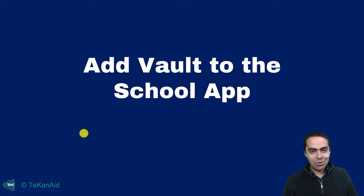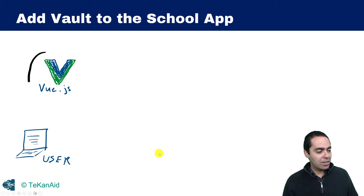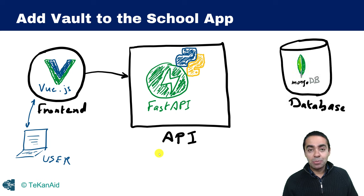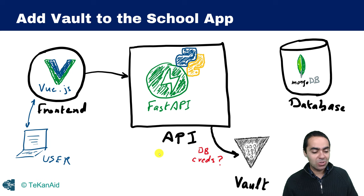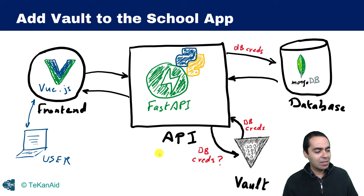Now let's add Vault to the mix. We have the same workflow: the user talks to the frontend, the frontend talks to the Fast API backend, and MongoDB needs to be accessed. But this time we're going to rely on Vault to supply the necessary credentials. The API will reach out to Vault, authenticate, and retrieve the database credentials so the API can talk to the database, which responds back through the API to the frontend.